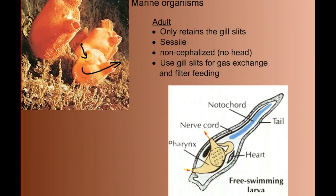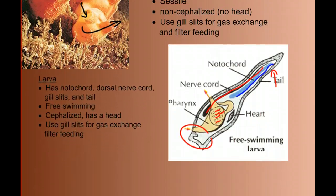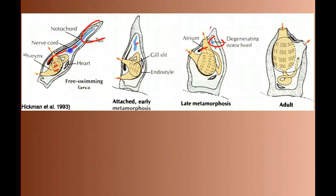When we look at the larvae, we see all four chordate characteristics: the notochord, the dorsal nerve cord running down the backside, the gill slits in the pharynx for filter feeding and gas exchange, a tail, and a head region. These free-swimming larvae at some point mature into the adult. As they metamorphose into the adult, they lose these structures — the notochord degenerates, the nerve cord also degenerates, and the tail goes away. The gill slits, which they used for filter feeding and gas exchange as free-swimming larvae, are retained in the adult form for the same functions.